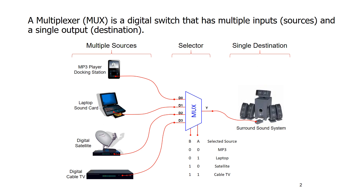In this video, I'm going to talk about multiplexers and demultiplexers. This is a diagram of a multiplexer. A multiplexer is really just a digital switch that allows multiple inputs. Here are my multiple inputs — I have four inputs: my mp3 player, my laptop sound card, and so forth. I might have a digital satellite box or a cable TV box, and I want to be able to select which of these inputs goes to my output. My output might be my stereo speakers. So a multiplexer has multiple inputs and a single output, and you can select which of these inputs goes to your output.